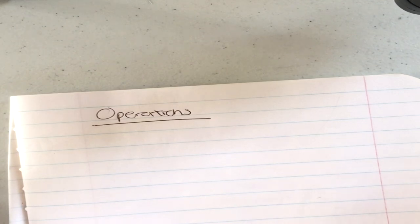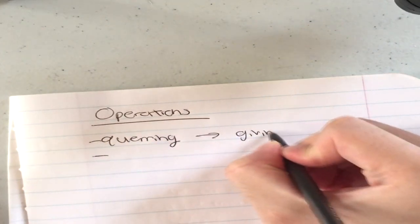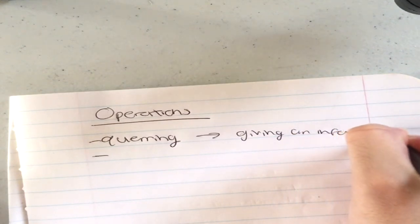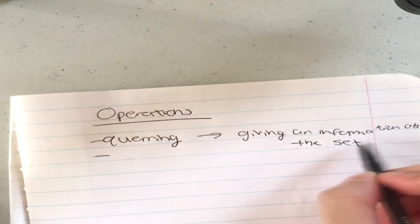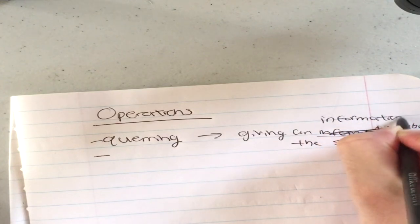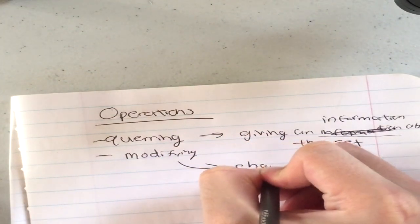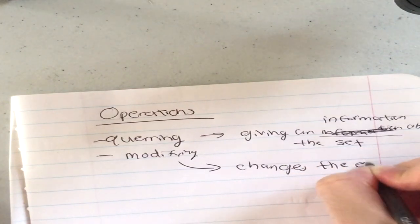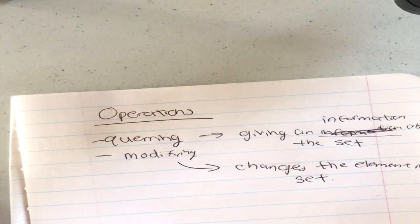There are two types of operation categories. One is querying, which just returns information about the set. The other is modifying operations, which changes elements in the set. Those are the two types of operation categories you can perform on a set.